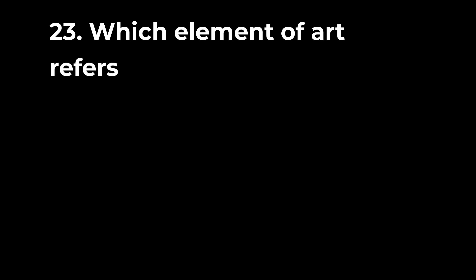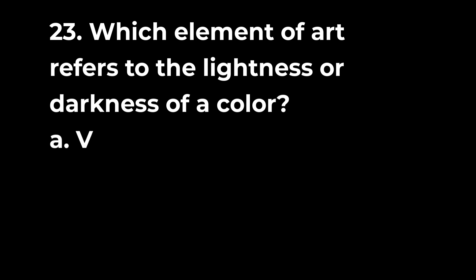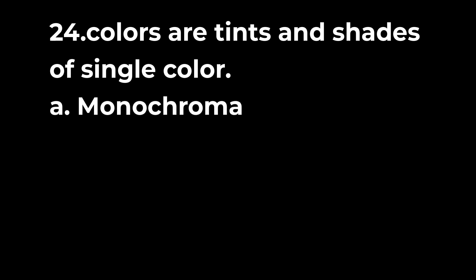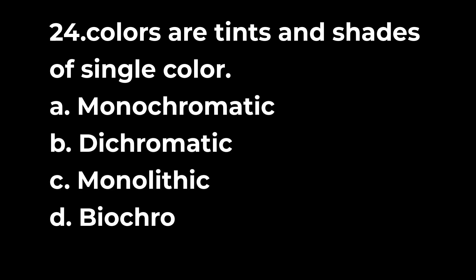Question 23: Which element of art refers to the lightness or darkness of a color? a. Value b. Form c. Space d. Intensity. Question 24: Colors are tints and shades of single color. a. Monochromatic b. Dichromatic c. Monolithic d. Biochromatic.